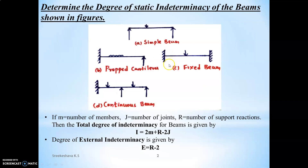If assuming axially rigid, we ignore the horizontal reaction at both supports, giving only two support reactions at each end — so totally only four support reactions in the case of axially rigid. If it is axially not rigid, we consider the realistic number of reactions: three at each support, giving six total. So if axially not rigid, total external support reactions = 6; if axially rigid, total = 4 (two plus two).